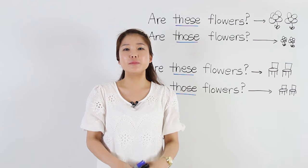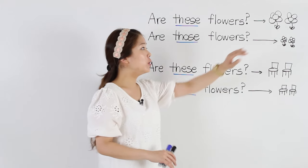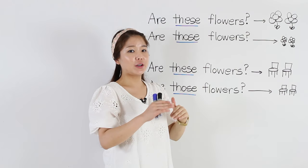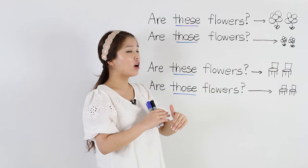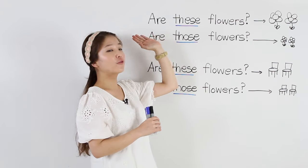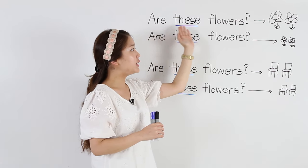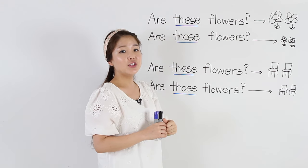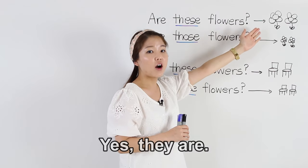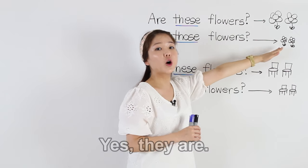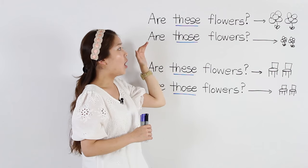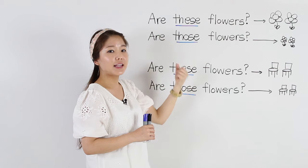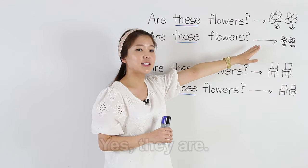Now we're going to make some questions. We know these are flowers. When you want to make a question, you have to change these are and put the be verb first, so it becomes: Are these flowers? The answer is yes, they are. Now the flowers are far away, so we say, Are those flowers? And again, the answer is yes, they are.